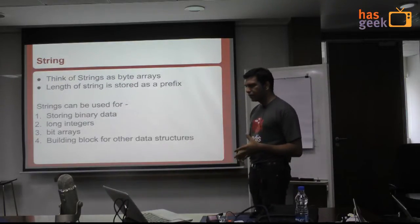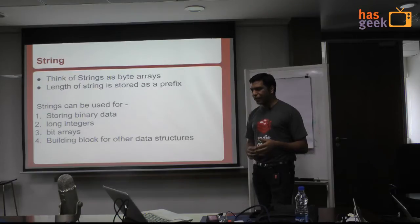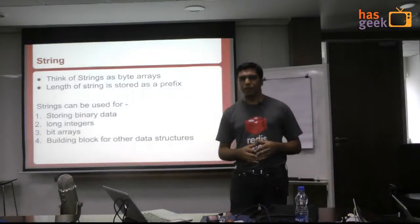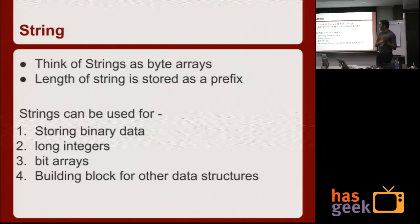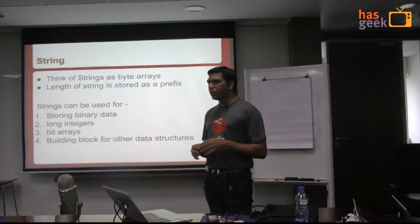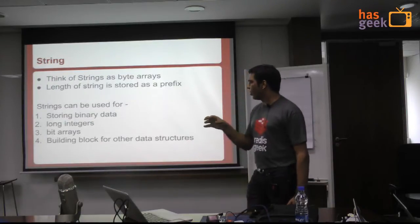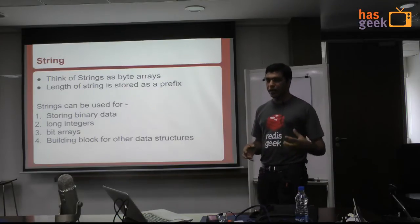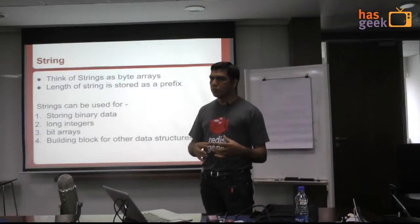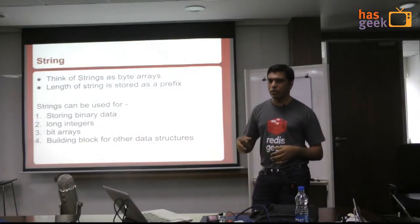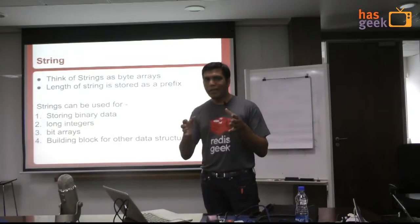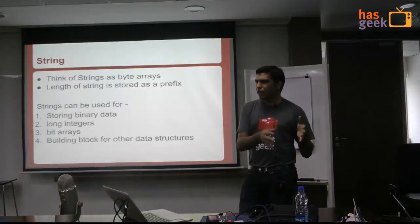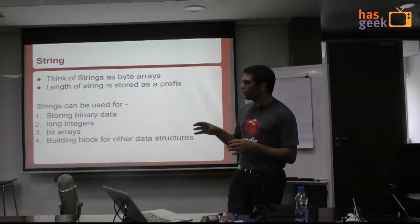The first data type is the most common, which is string. And string is actually a misnomer — in Redis, consider string as a byte array. It's just an array of bytes and you can store any sort of data in that. You can store characters, text, binary data, long integers, bit arrays. Internally, the string data structure is used as a building block for other data structures. If you're storing a small list or a small set, Redis will do optimizations to store it internally in a string, which is just a byte array.